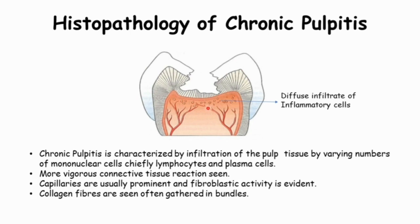Chronic pulpititis is characterized by infiltration of the pulp tissue by varying numbers of mononuclear cells, chiefly lymphocytes and plasma cells. A more vigorous connective tissue reaction is seen. Capillaries are usually prominent and fibroblastic activity is evident.